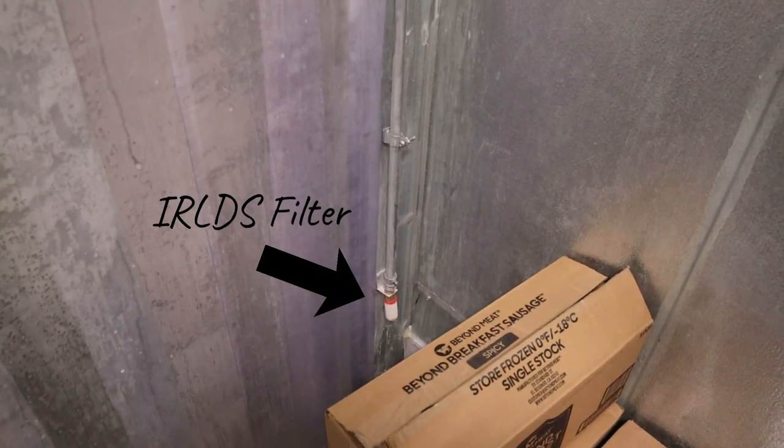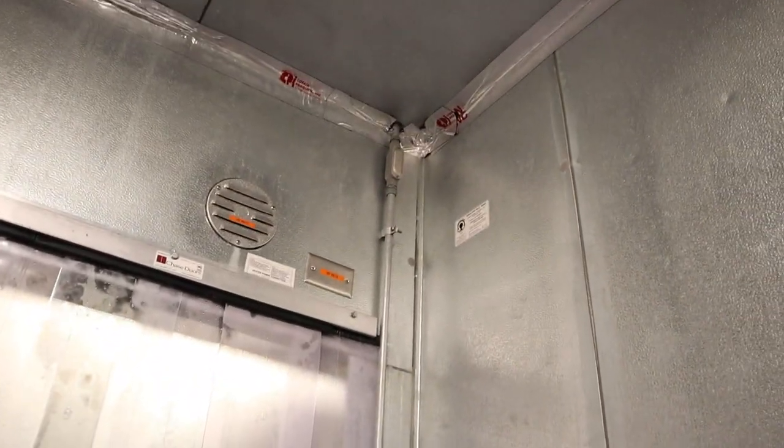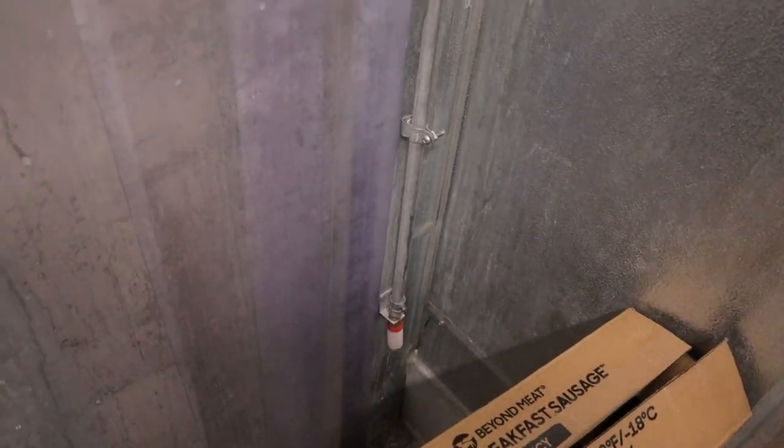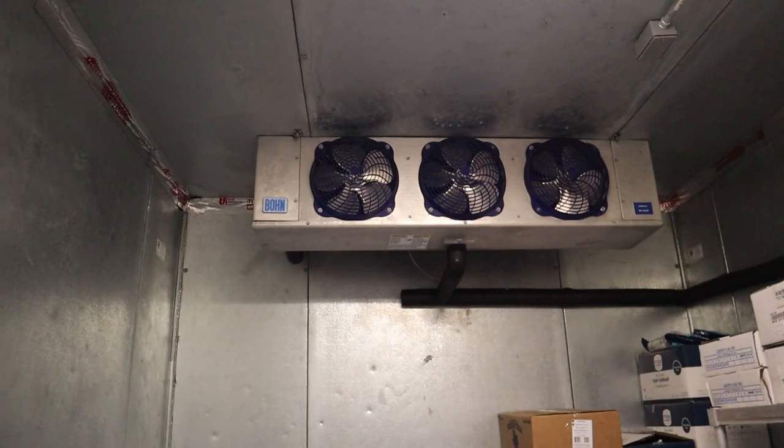So on the walk-ins you can see here's a filter in the bottom, the vinyl tubing going up to the RLDS in the back. So pretty much in all the walk-ins, this is what it's going to look like with these sensors in the bottom. They get dirty from time to time when you clean them. So this one's in the freezer right here.